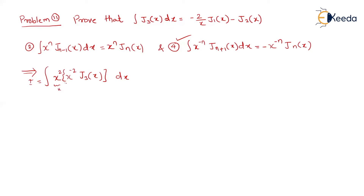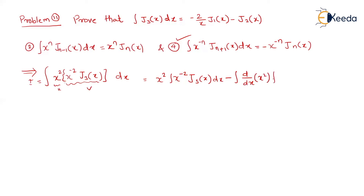Now this is u and this is v. You need to apply the u·v rule, which is the integration by parts rule. The uv rule says: u as it is, times the integration of the second term v, minus the integration of the derivative of u times the integration of v, all times dx.